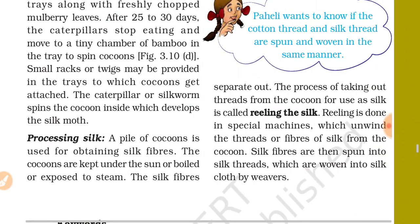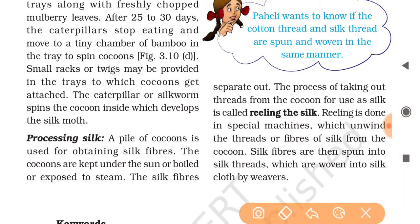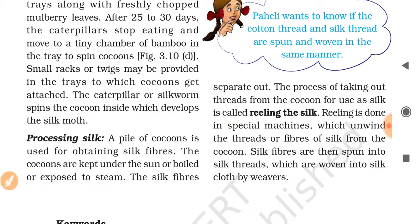Then the processing of silk takes place. A pile of cocoons is used for obtaining silk fiber. The cocoons are kept under the sun, boiled, or exposed to steam, and the silk fiber is separated out. The process of taking out threads from the cocoon for use as silk is called reeling. Reeling is done in special machines which unwind the threads or fibers of silk from the cocoon.